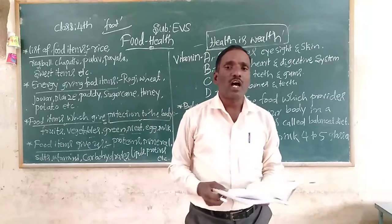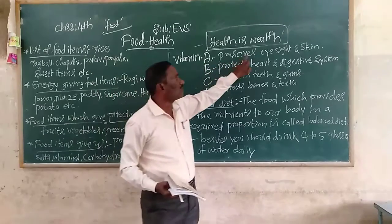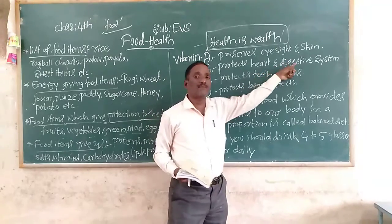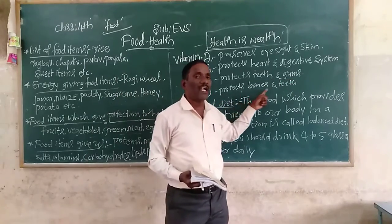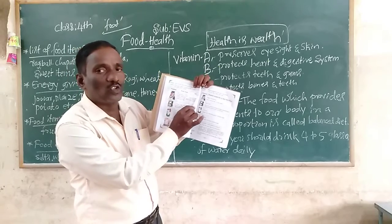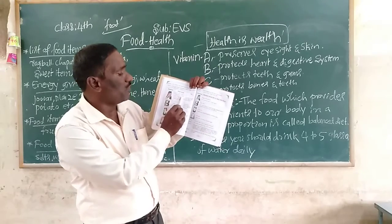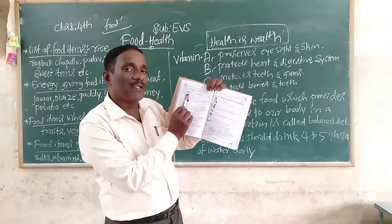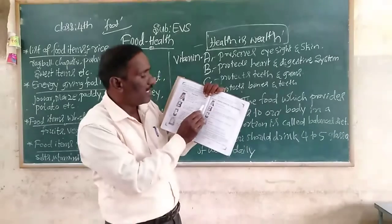Food items and vitamins: Vitamin A, Vitamin B, Vitamin C, Vitamin D. Vitamin A preserves eyesight and skin in our body. Vitamin B protects all the digestive systems. Vitamin C protects teeth and gums. Vitamin D protects bones and teeth. Look at your textbook page number 67 — vitamin food items and their uses. Vitamin A is found in green and yellow vegetables and fruits, leafy vegetables, carrot, butter, ghee, milk, and egg. Uses of Vitamin A: good eyesight, skin, and teeth.